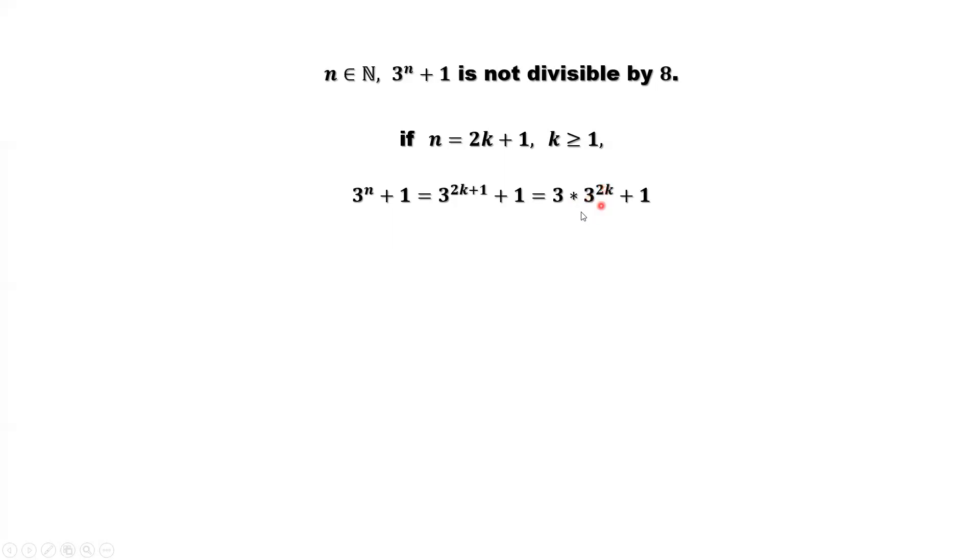The same situation we discussed for the even number case. Rewrite 3 squared as 9. 9 is 8 plus 1. Use the binomial formula. From the expansion part, we can see this second part is in the format 8m plus 1 for some m. Because in the expansion, the last term is 1, and all other terms contain 8. So we can rewrite as 8 times m for some m.